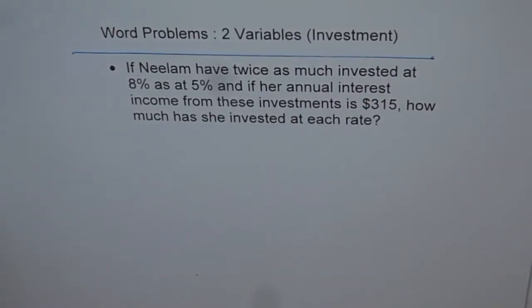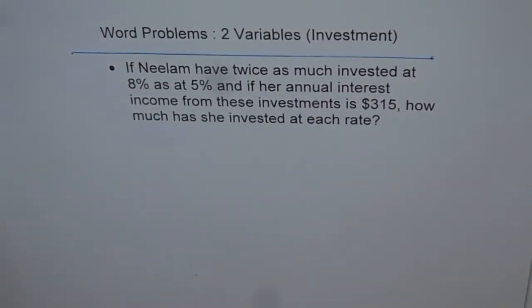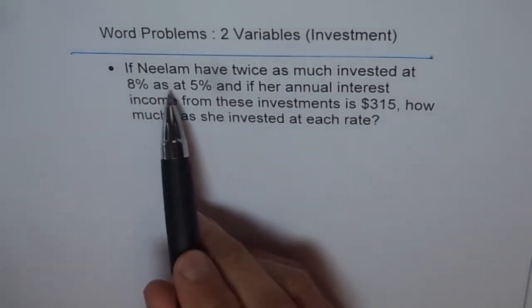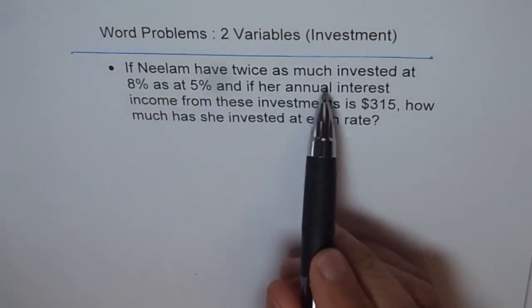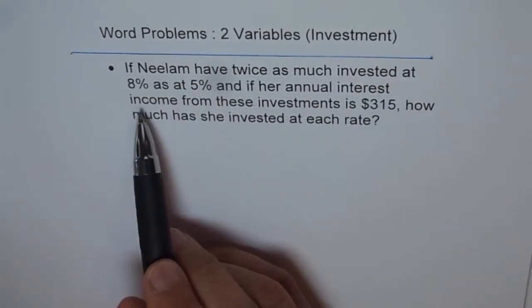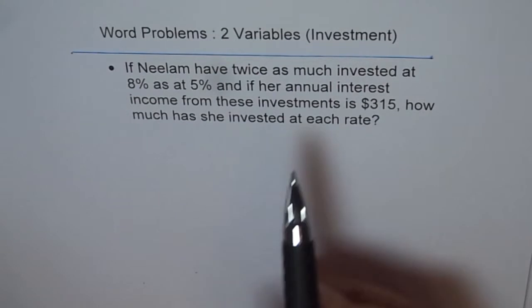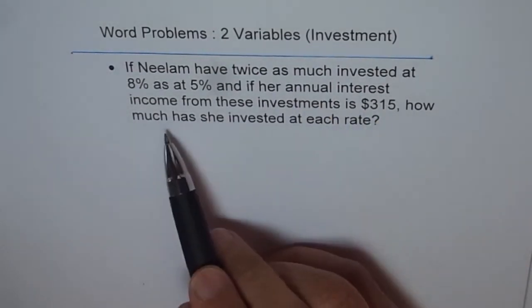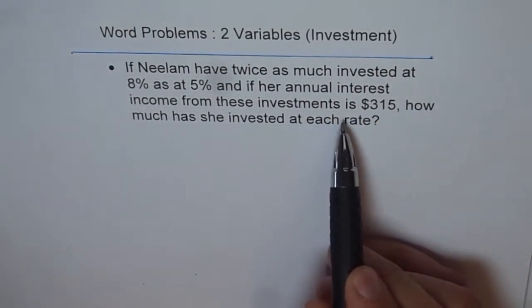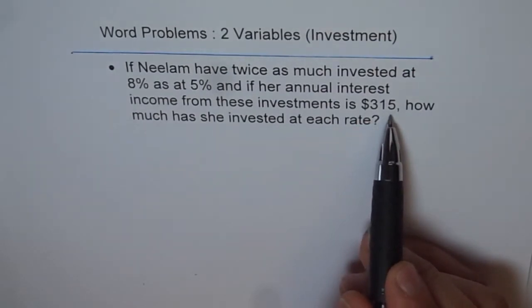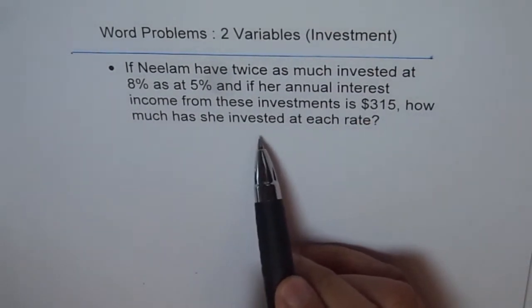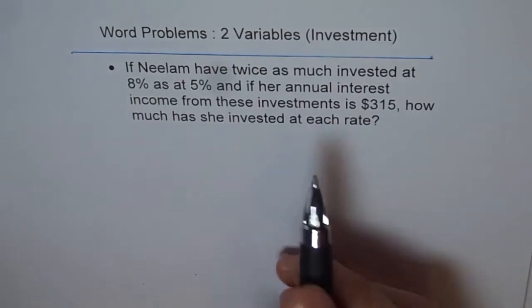Here is an interesting problem on investment which we will try to solve using two variables. The question is, if Neelam have twice as much invested at 8% as at 5% and if her annual interest income from these investments is $315, how much has she invested at each rate?